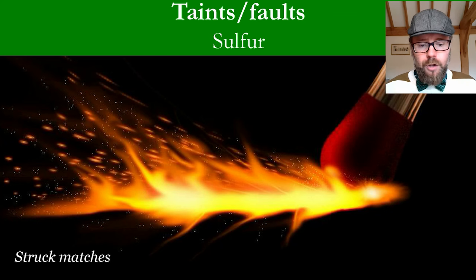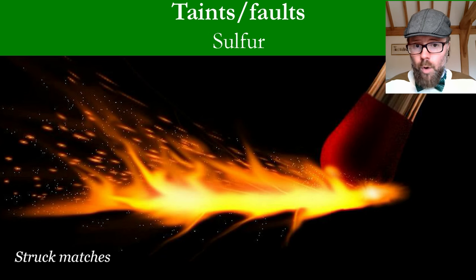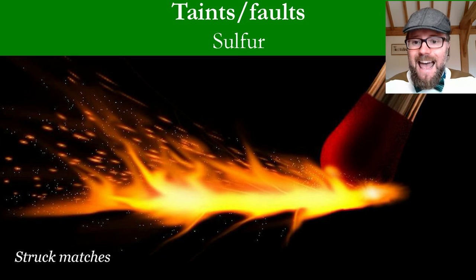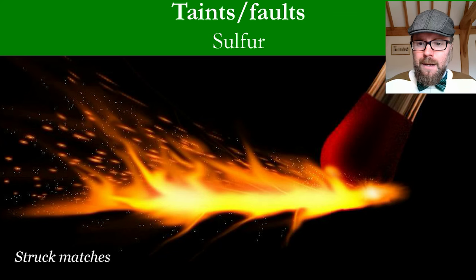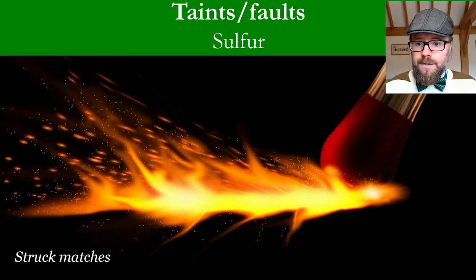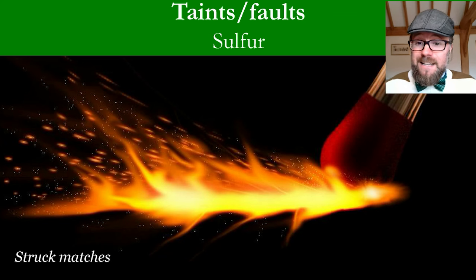Sulfur dioxide is next. It is added to almost all wines, with levels tending to be higher in sweet wines. Sulfur is naturally found in wine through fermentation and is added at very strategic times in winemaking to protect the wine. If too much is added, at very high levels it can give a wine an acrid smell of struck or extinguished matches. At low levels it can mask the fruitiness of the wine, yet insufficient sulfur dioxide used before bottling can cause premature oxidation — so it truly requires a balancing act.